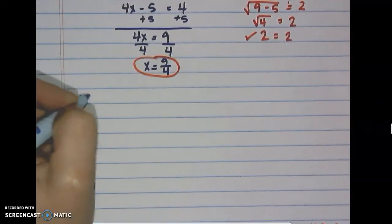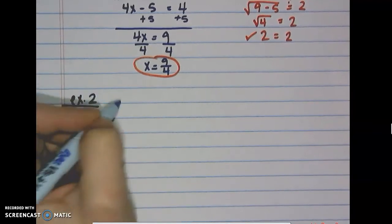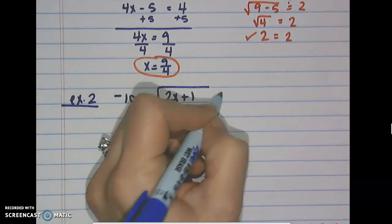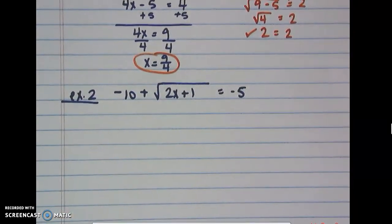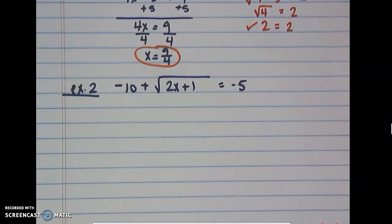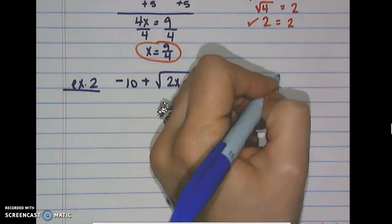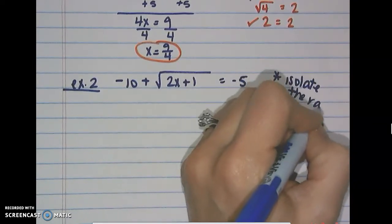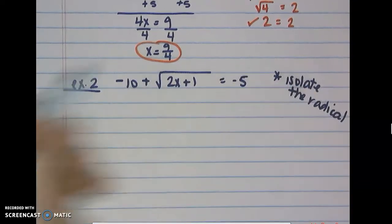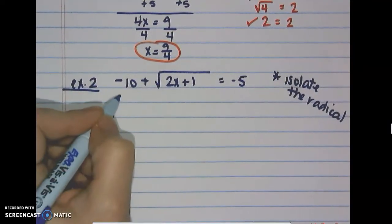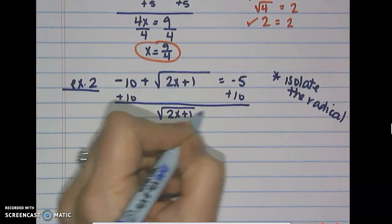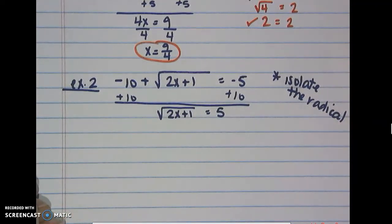Next: we have negative 10 plus the square root of 2x plus 1 equals negative 5. With this question, there's something else on the side with the radical, so we want to isolate it. We add 10 to both sides, which gives us the square root of 2x plus 1 equals positive 5.